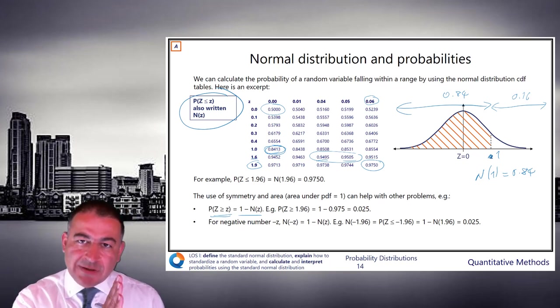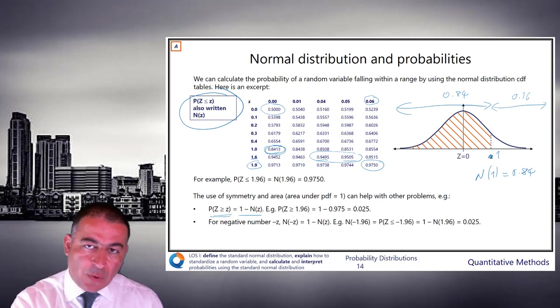So the probability to the left of 1 is 0.84. The probability to the right of 1 is 1 minus 0.84, which is 0.16. Hopefully, it's fairly simple.